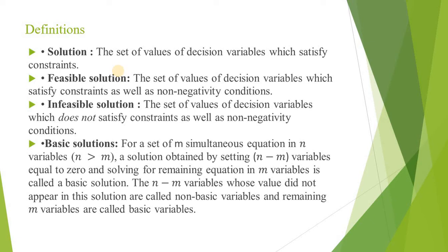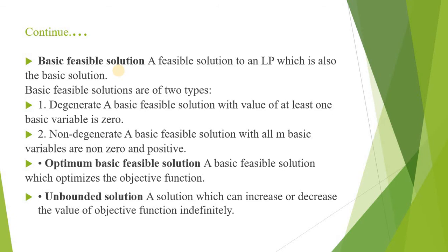Basic solutions: if there are m simultaneous equations or m constraints and n variables, and if the number of variables are more than constraints, then a solution obtained by setting n minus m variables equal to zero and solving the remaining equations for m variables is called the basic solution. In other words, m out of n variables will have non-zero values where the rest of the variables will have zero values, and those non-zero values are known as the basic solution.